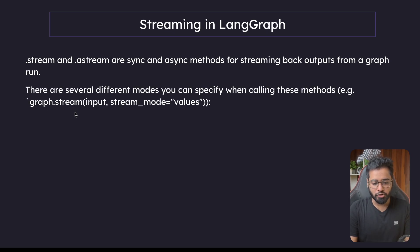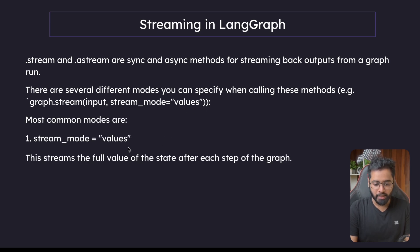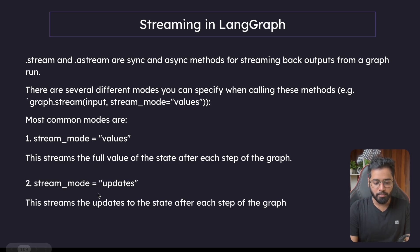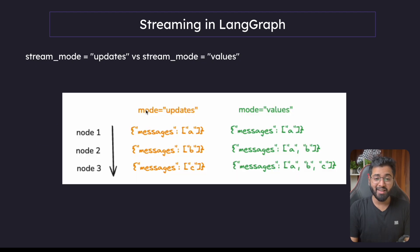We can say graph.stream — this is very similar to how we say graph.invoke. We pass in the initial state and the stream mode. The common modes are: 'values,' which streams the full value of the state after each step of the graph, and 'updates,' which streams only the updates to the state after each step of the graph.